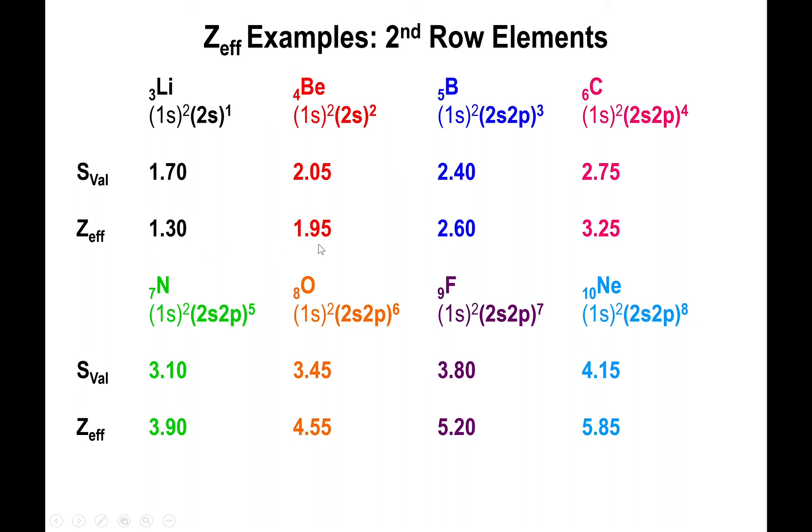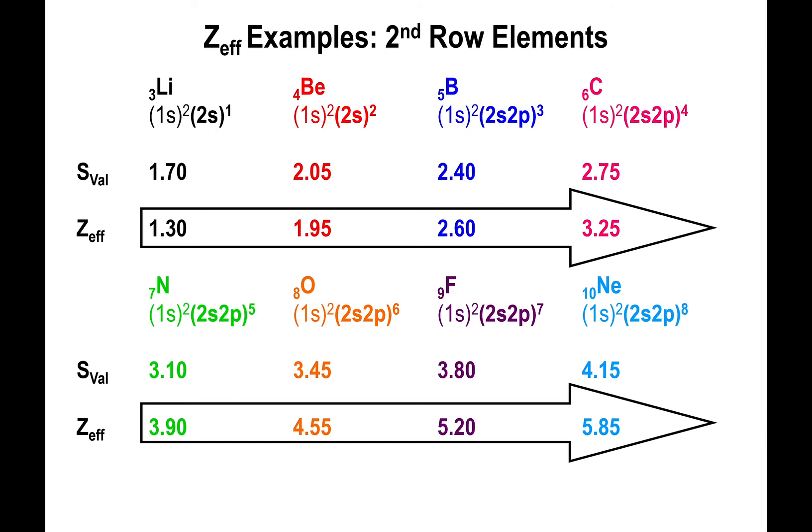When you carry out the subtraction, what you find is that the effective nuclear charge of lithium going up to neon basically increases. The effective nuclear charge goes from 1.3 to 1.95, then 2.60, then up to 3.25, then up to 3.90, up to 4.55, up to 5.20, and ending with 5.85. Because the effective nuclear charge is increasing as we go from the left portion of the periodic table to the right, this tells us that the size of the atoms will decrease. The more effective nuclear charge the valence electrons experience, the greater the force of attraction between the nucleus and the electron, causing the electron to get closer to the nucleus. This is the real reason you are decreasing the size of the elements as you go from left to right.